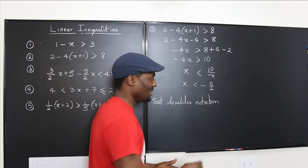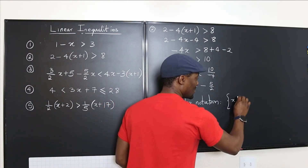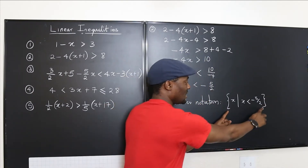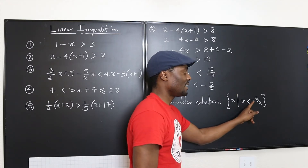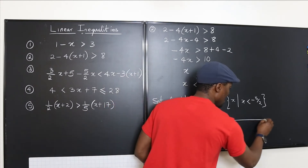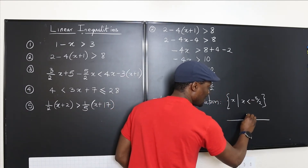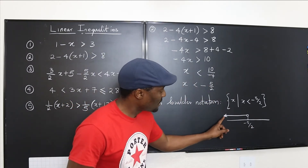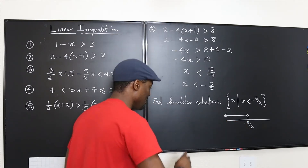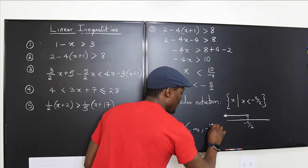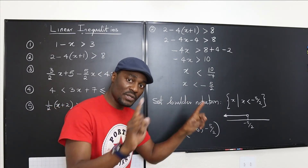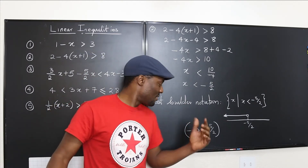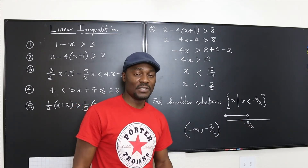That's the end of all the calculations. Let me present my answers. There are many answers to this because it could be any number less than negative five over two. Using set builder notation, it is the set of x such that x is less than negative five over two. If you want to use the number line, because it's strictly less than, you place an empty circle at negative five over two and shade to the left. If you want to use interval notation, it starts from negative infinity to just before negative five over two. Remember, the reason we use curved brackets or parentheses is because these numbers are not part of the answer — they are just before or just after the solution.